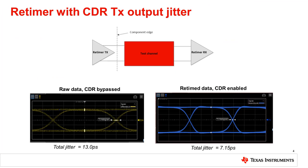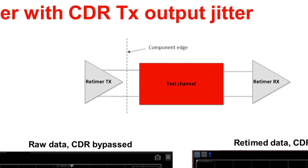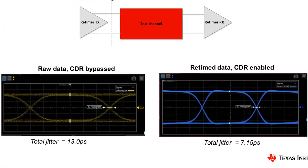To illustrate the benefit of CDR function, let's examine the output of a 10 gigabits per second retimer when its CDR is enabled versus bypassed. The output eye diagrams of the retimer shown were measured using a high-speed sampling scope. The retimer test point used is the component edge, defined as a measurement taken for a short distance from its output pins. The total jitter values correspond to an error probability level of 1e to the negative 12. As evident when comparing the two retimer output eye diagrams, the use of the CDR reduced the total jitter by a whopping 45%.